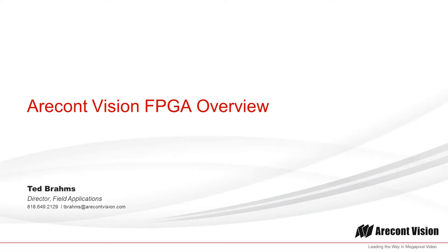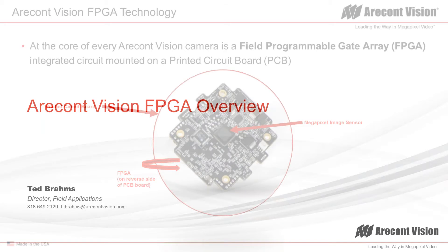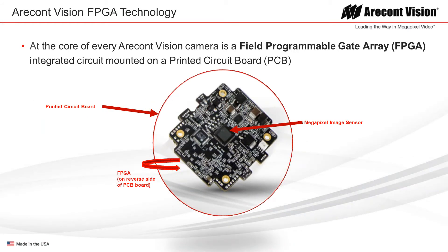I'm going to have a slightly different talk track for my tech tips this week. I'm going to be talking about the unique architecture that a lot of people aren't aware of that the AERICON Vision cameras have, that's really distinguishing us from the rest of the industry. We have a unique electronic design for our cameras, and that includes the use of a field programmable gate array — an FPGA — and that's what we actually use for feature video processing on our cameras, distinguishing us from computing solutions.